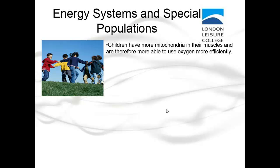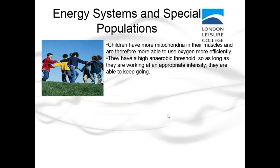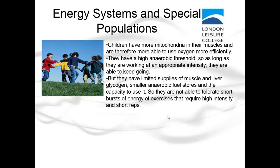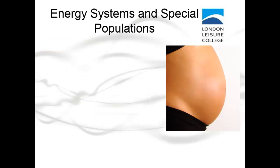Children have more mitochondria in their muscles and are therefore more able to use oxygen efficiently, with a high anaerobic threshold. However, they have limited supplies of muscle and liver glycogen, smaller anaerobic fuel stores, and limited capacity to use them, so they are not able to tolerate short bursts of high-intensity exercise — though this improves with age.